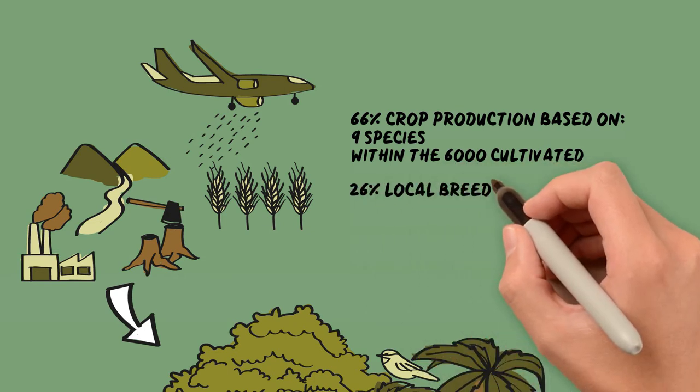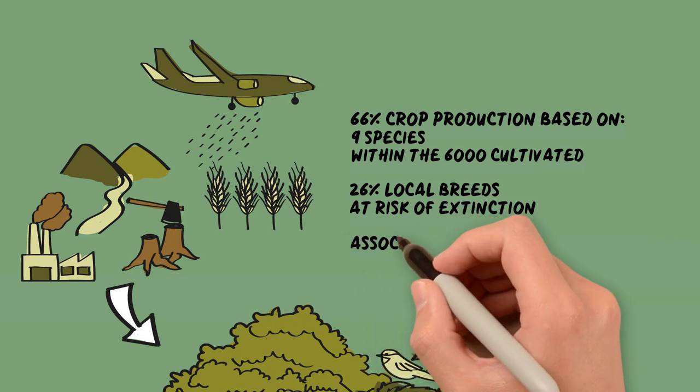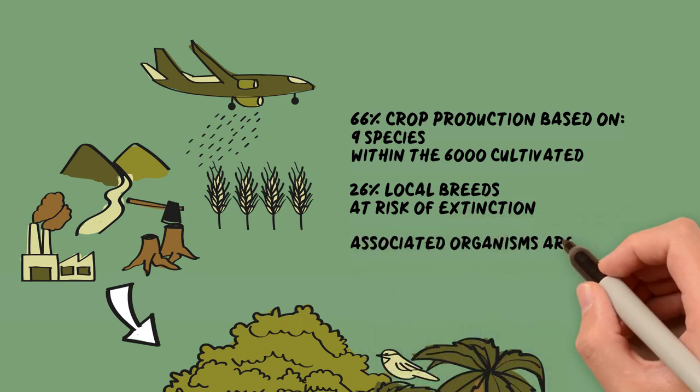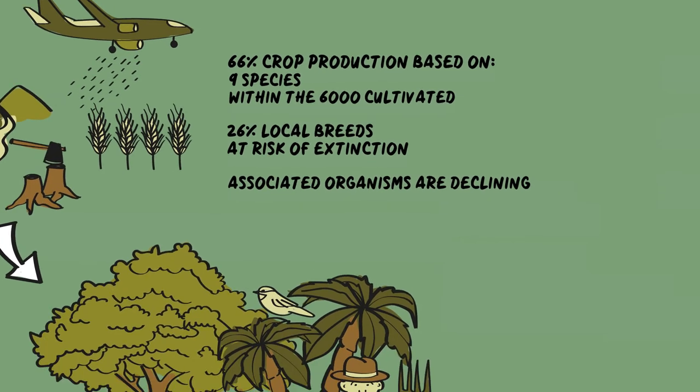26% of local breeds of livestock are at risk of extinction. Many species associated with agricultural practice, such as soil microorganisms, pollinators, and natural enemies of pests, are declining.